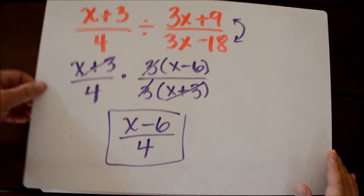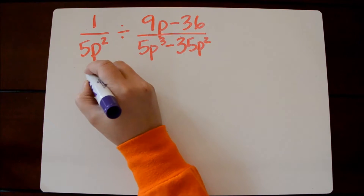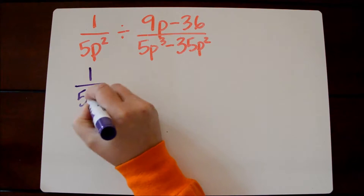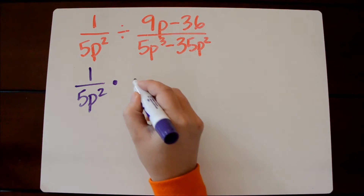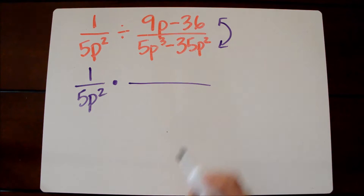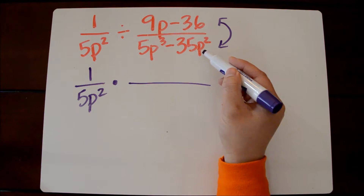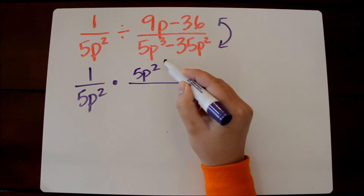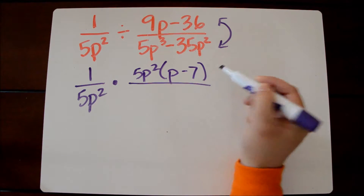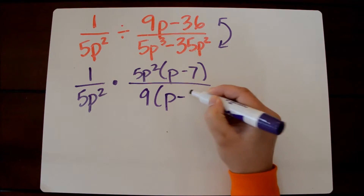Let's take a look at another example. I look at my first expression here — I can't factor anything out, so I'm going to keep that the same. I'm going to change this to multiplication because we're multiplying by the reciprocal, and then I'm going to do two steps in one. I'm going to take the reciprocal of the second expression, but I'm also going to factor it at the same time. Looking here at the denominator, which will now go in the numerator, I'm going to factor out 5p squared. What I'm left with is p minus 7. In the denominator, I'm going to factor out a 9, and I'm left with p minus 4.